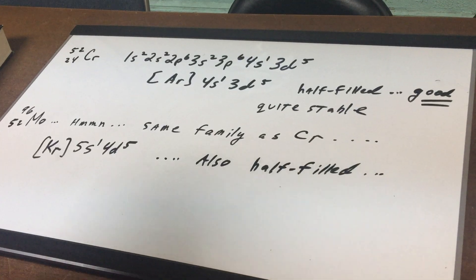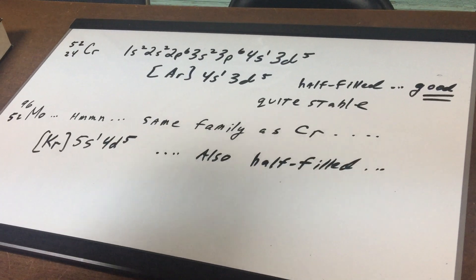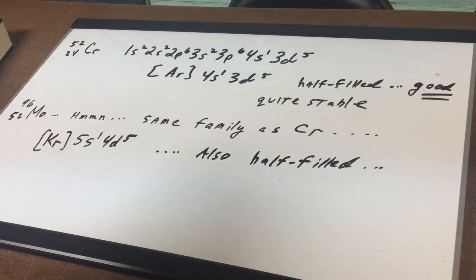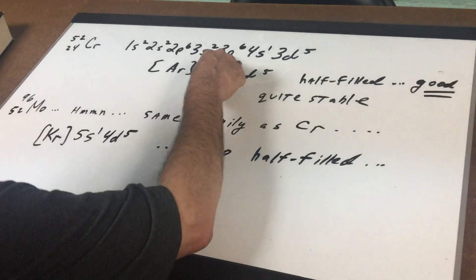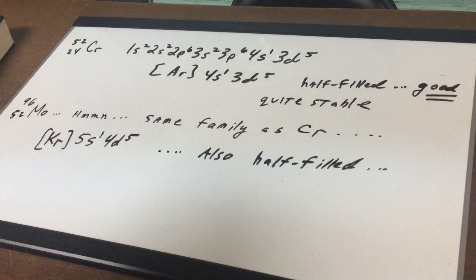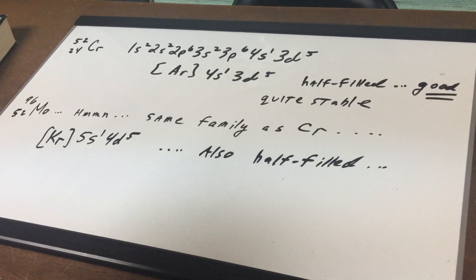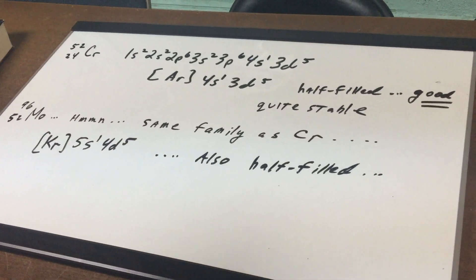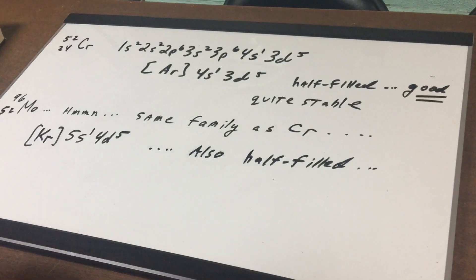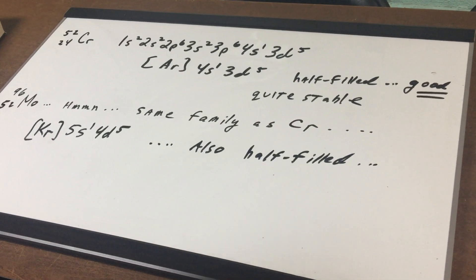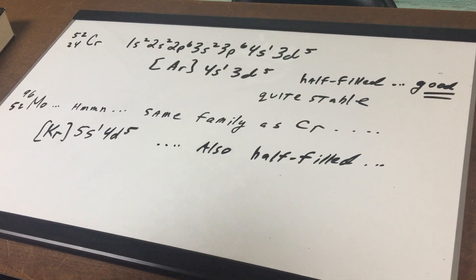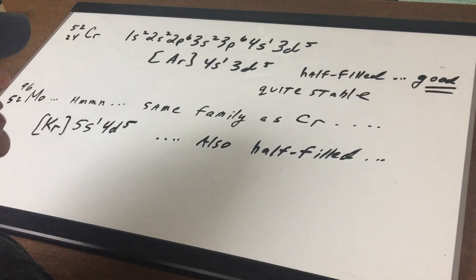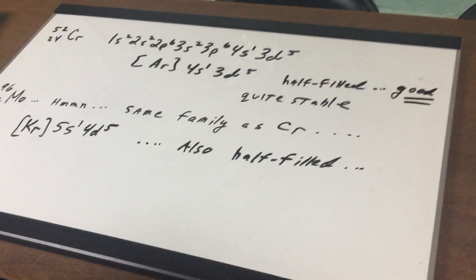I hope this helps. For the DAT, remember how to write the configuration for chromium and notice the anomaly — after 3P comes 4S1 instead of 4S2. And remember that what applies to chromium follows in suit for molybdenum. It doesn't work for tungsten underneath molybdenum though, so don't get greedy. The first two work really nicely. Okay, I hope this helps — I'll see you in study group. Good day to you.